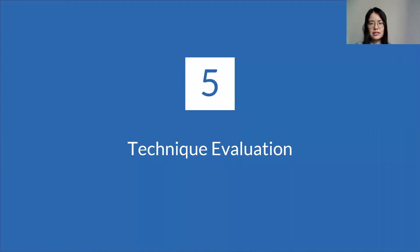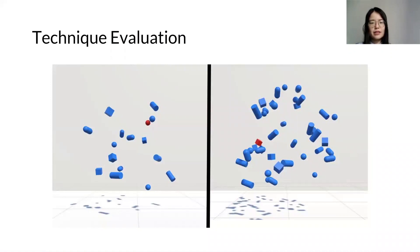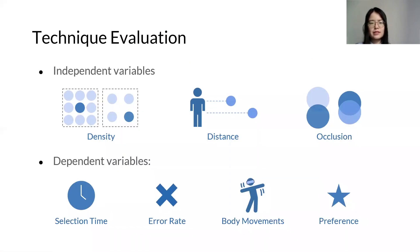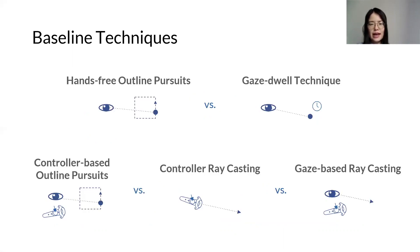We designed and conducted a user study to investigate the performance of the proposed outline pursuits techniques and gather user feedback. In a VR environment, participants were tasked with selecting a target object among many as fast as possible. We varied the object densities, distance to the user, and levels of occlusion. We measured selection time, error rate, head and controller movement, and user preferences. For comparison against the hands-free outline pursuits approach, we use a dwell-to-wheel technique, where a target is selected once the user has dwelled upon it for one second. For comparison against the controller-based outline pursuits technique, we chose both controller and gaze-based raycasting approaches. In both cases, confirmation is made via button click.